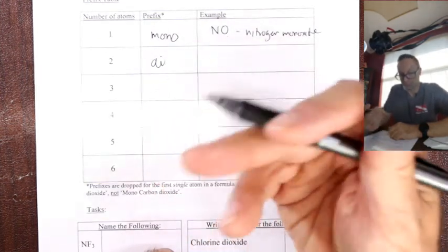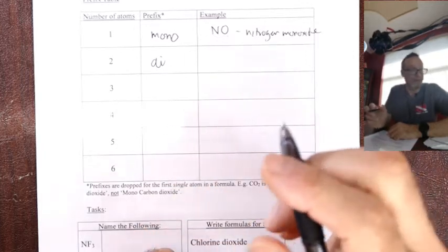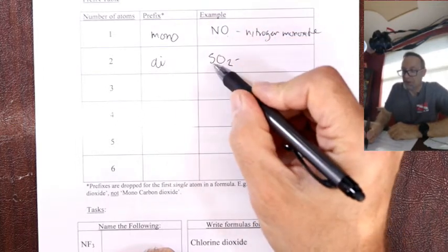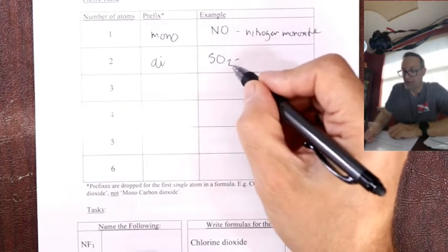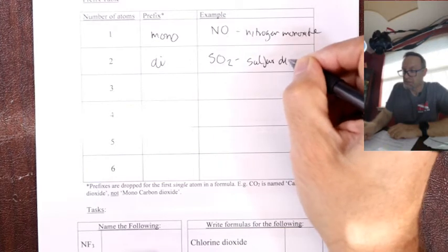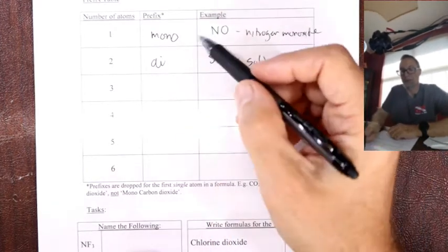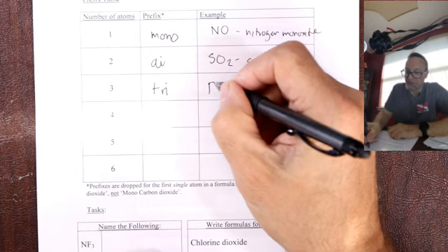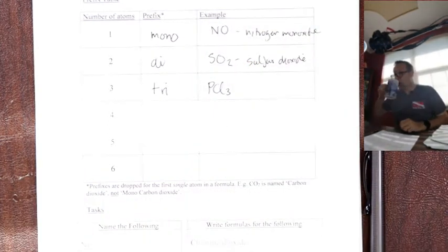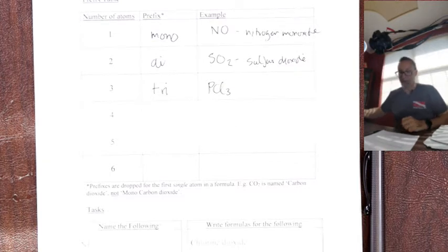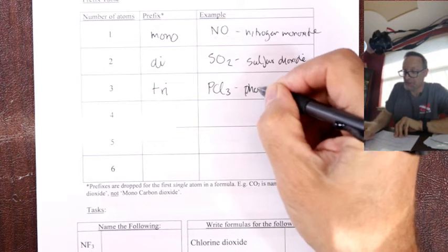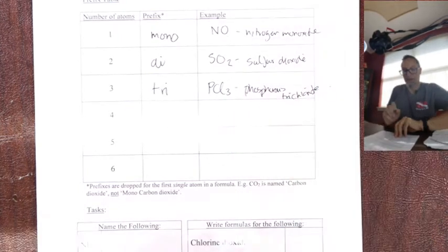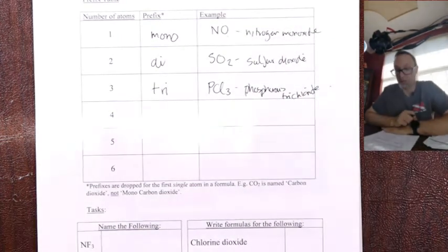Di means two, of course. So dimer in chemistry is two atoms stuck together. Two molecules rather stuck together. So dimer. So di means two. So that's why that one is one sulfur. So sulfur, no mono, because it's in front. Sulfur, di, two oxide, sulfur dioxide. So mono's one, di, two. Three, think of a three-sided shape. Tri. So you name this. What's this? PCl3. What's that? If you said phosphorus trichloride, you are correct. Phosphorus trichloride. That's what you make when you burn phosphorus and chlorine.